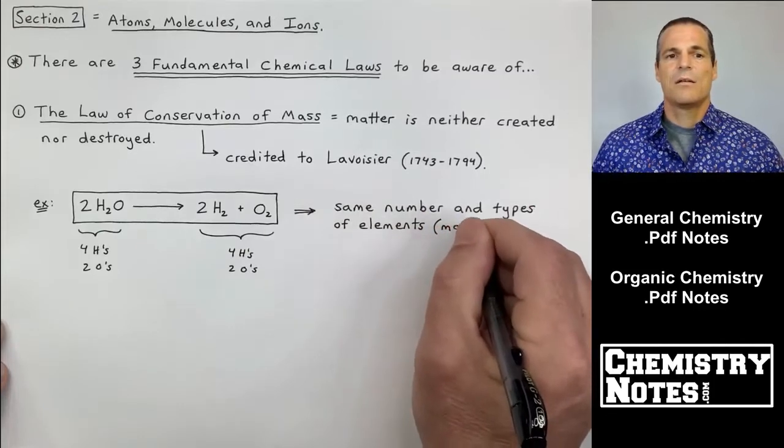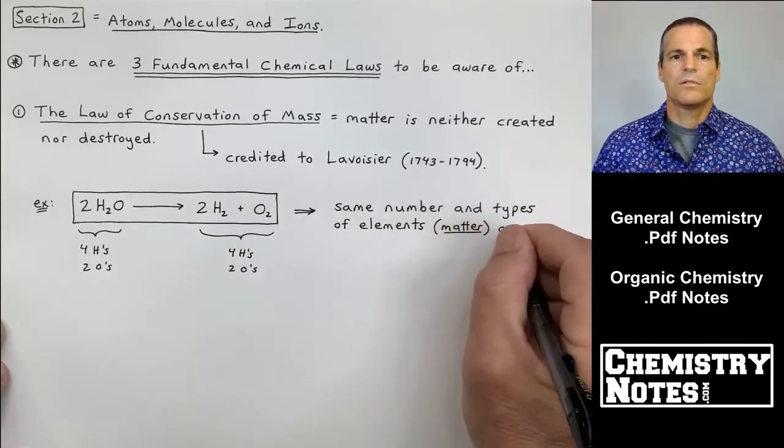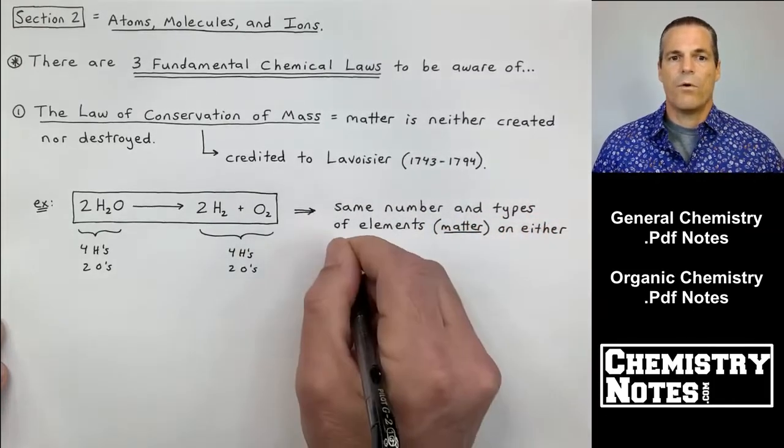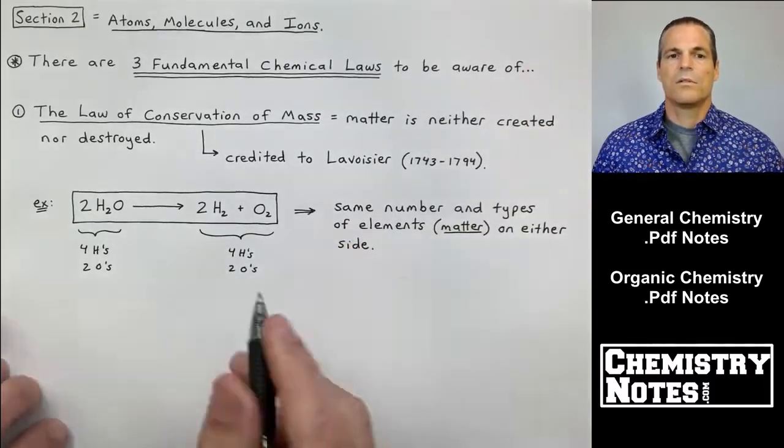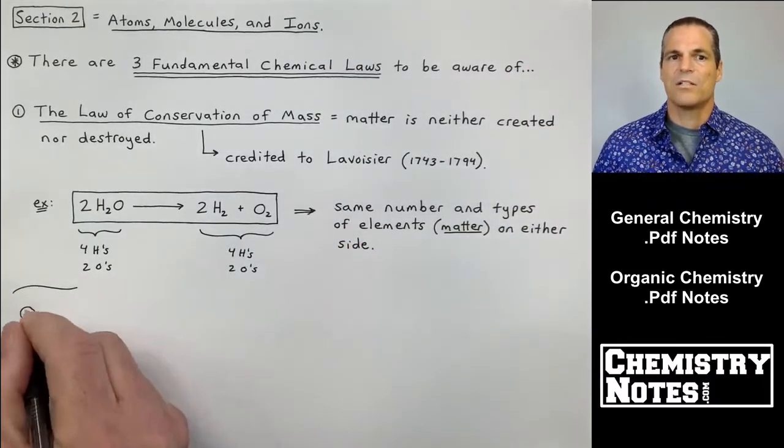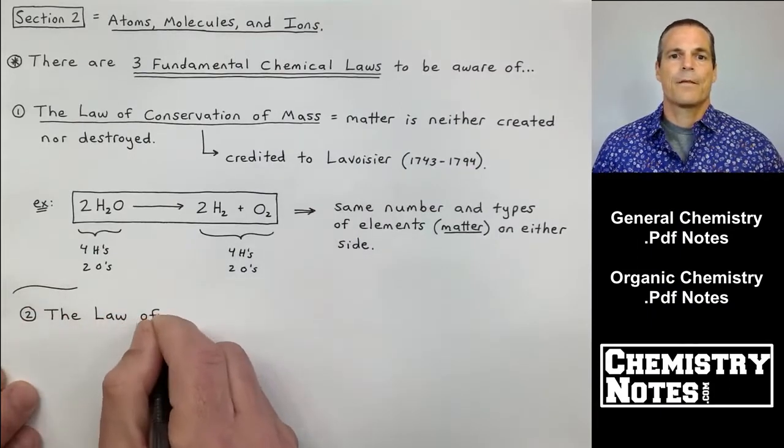On the left-hand side, four H's, two O's. On the right-hand side, four H's, two O's. This is why we balance equations because of the law of conservation of mass.